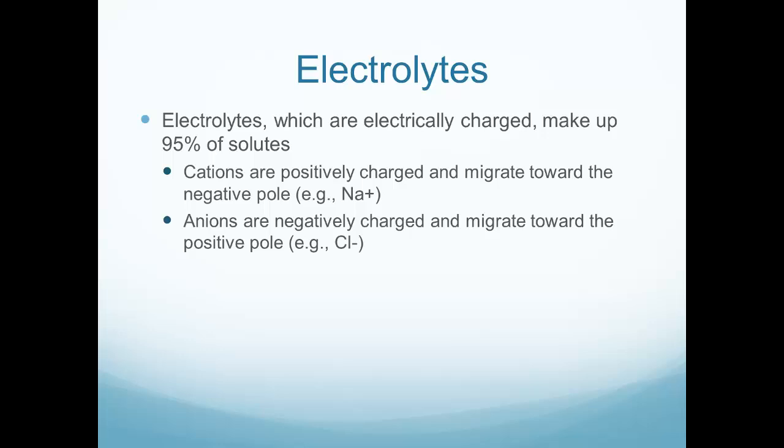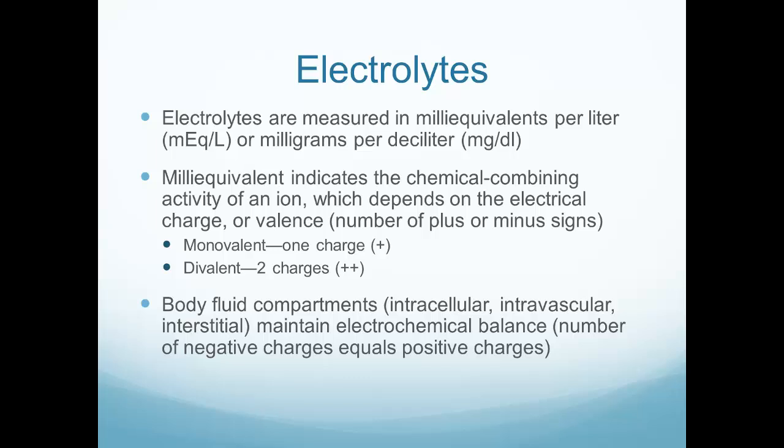A mnemonic for remembering: 'AN' in anions can remind you they're negatively charged. Electrolytes are measured either in milliequivalents per liter or milligrams per deciliter. For example, a potassium level might read 4.8 mEq/L, while a blood glucose level might read 102 mg/dL. These are just two different units of measurement used when measuring electrolytes.